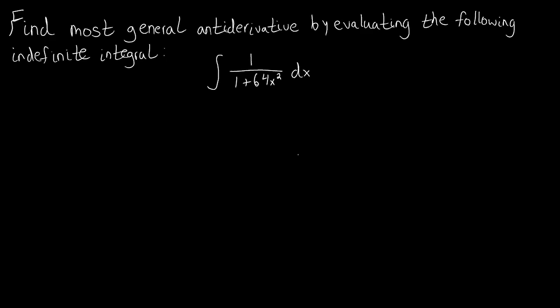In this video, we're going to look at another example of using the indefinite integral to find the antiderivative of a given function. When we talk about using the indefinite integral, the function that we're finding the antiderivative of is the integrand — the thing inside the integral. What we're trying to figure out is: if this is considered our derivative, what was the original function that produced it?